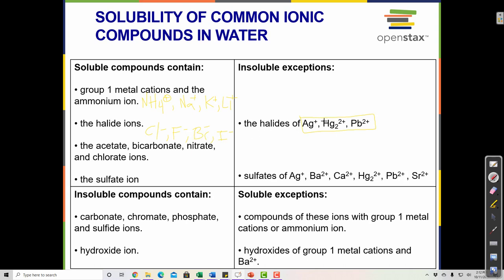Soluble compounds also contain acetate (C₂H₃O₂⁻), bicarbonate (HCO₃⁻, found in baking soda), nitrate (NO₃⁻), and chlorate (ClO₃⁻). Any compound with these ions is soluble. Additionally, the sulfate ion (SO₄²⁻) makes soluble compounds — except sulfates of silver, barium, calcium, mercury, lead, and strontium are insoluble.